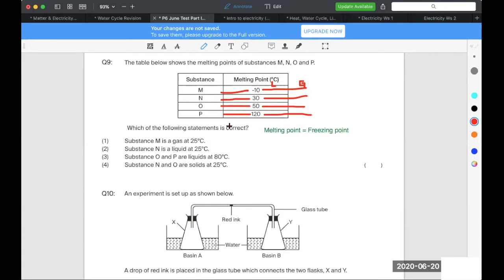Quite clear, right? So obviously treat this whole thing to be a number line. So look at number one. M is a gas at 25 degrees Celsius. Look at M, 25 degrees Celsius is where? 25 degrees Celsius is after negative 10.